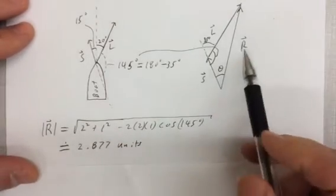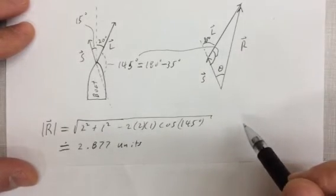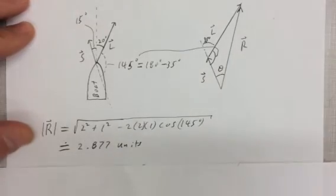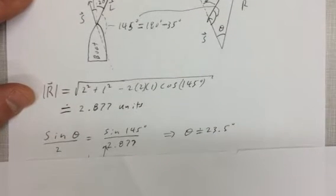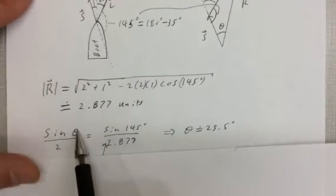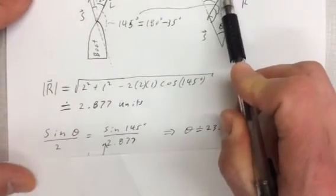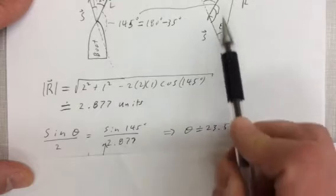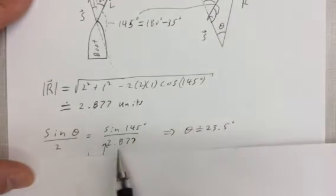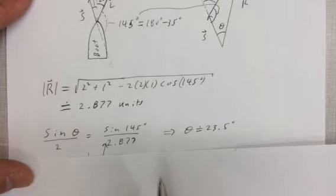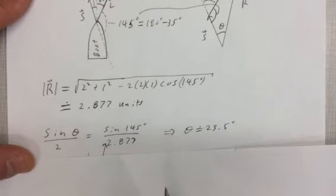And once we have that side, now we can use the sine law to figure out what theta is. Okay, so let's look at this here. We've got sine theta over two. So sine theta over the magnitude of the opposite side equals sine 145 over the magnitude of R, which is this side here. You work that all out and you'll get theta equal to 23.5 degrees.